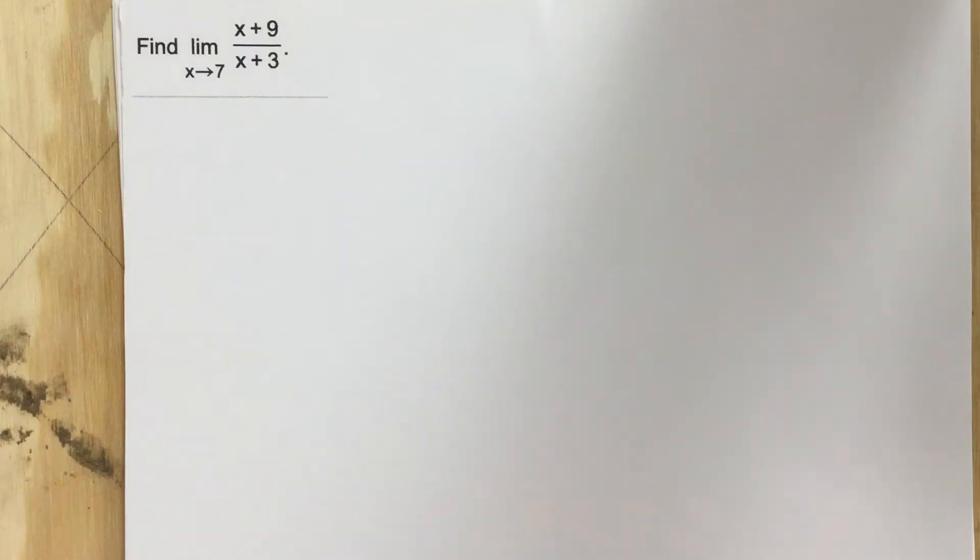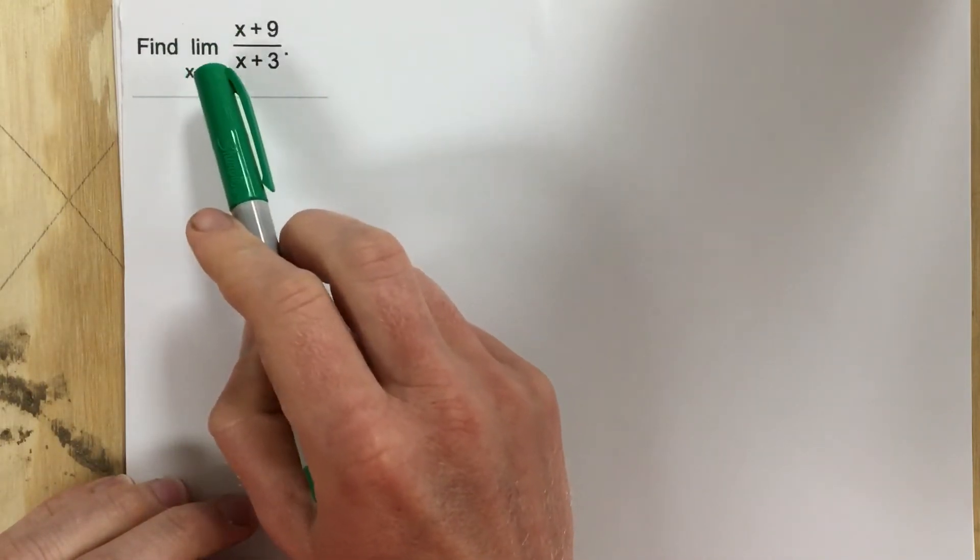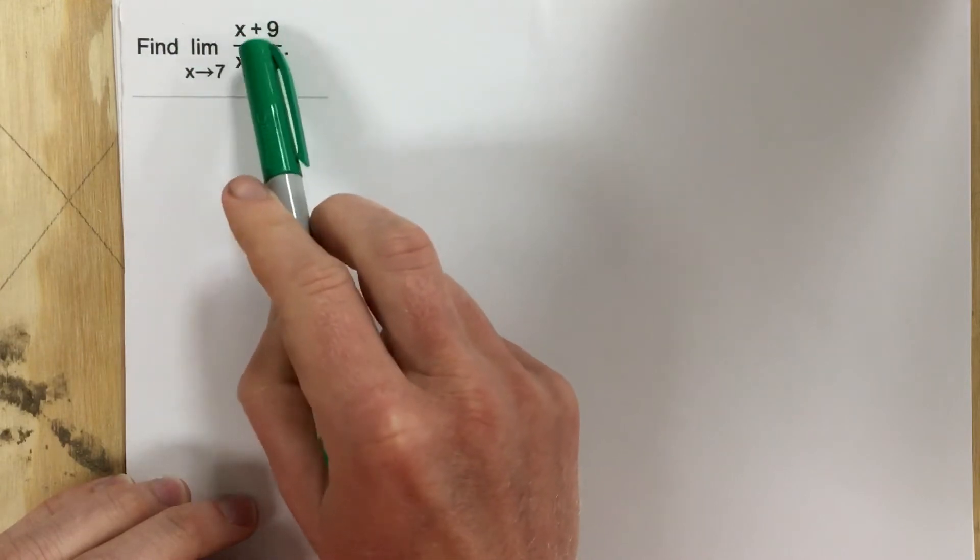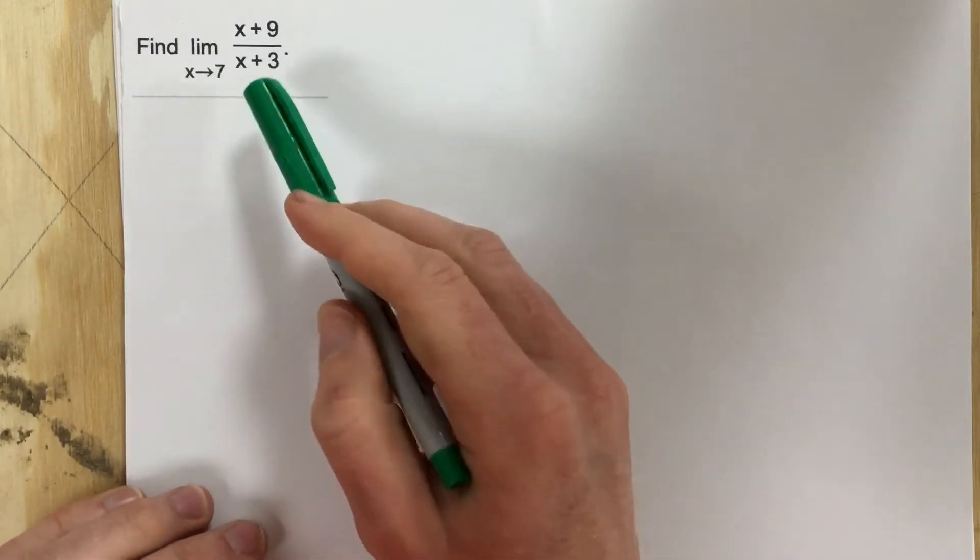This is problem number two from section 2.2. Find the limit of (x+9)/(x+3) as x approaches 7.